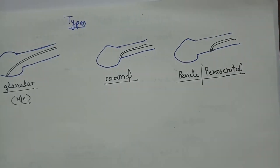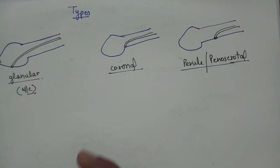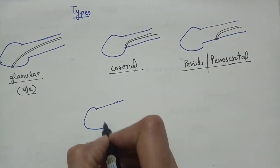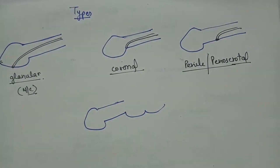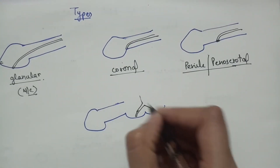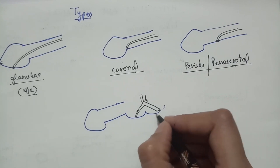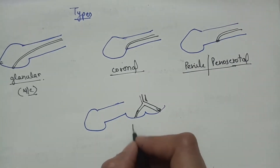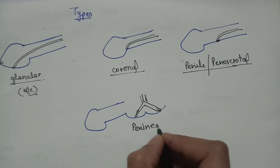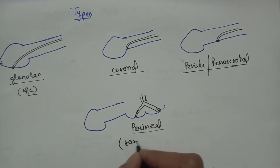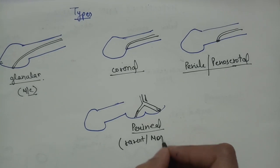The fourth type is when the urethra opens inside the scrotum — the scrotum is bifid and the urethra opens inside it. This is the perineal type, and it is the rarest and most severe type.